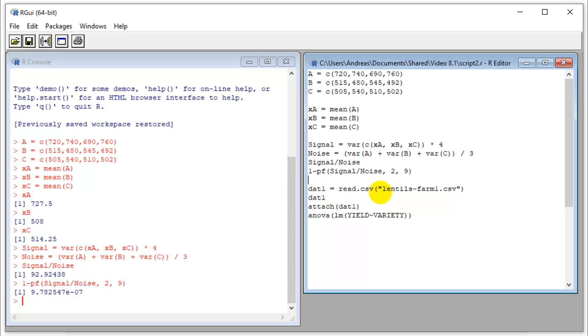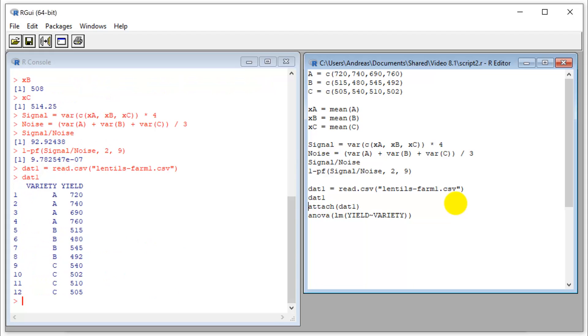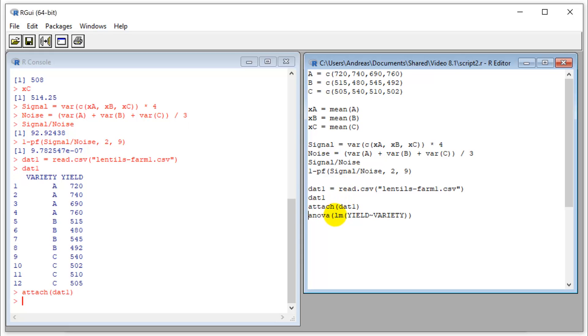As a double check, I do a standard analysis of variance here. We read our data in a standard data table format. We can look at it. There they are, we have variety and yield in a normal format. We can attach it. Then we run an ANOVA. The linear model is actually the function that runs an ANOVA, yield as a function of variety.